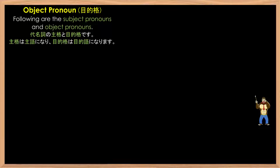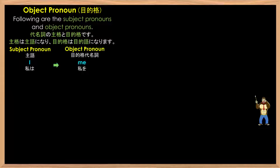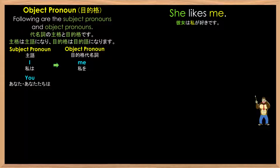Following are the subject pronouns and object pronouns. First we have I, which changes to me, as in 'she likes me.' Next we have you, which doesn't change — it's you again, as in 'I like you.'